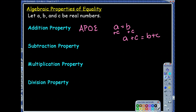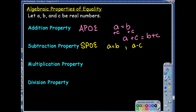The subtraction property of equality says if I subtract something from one side, I'm going to have to subtract it from the other side. The abbreviation is SPO, the subtraction property of equality. So if A is equal to B, then A minus C would equal B minus C. I could subtract the exact same thing from both sides and these two would still be equivalent.